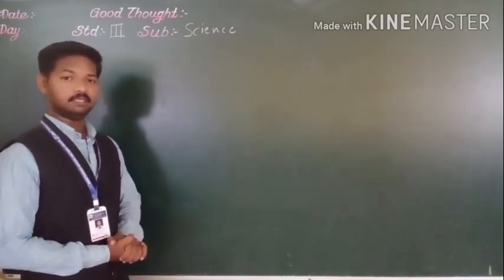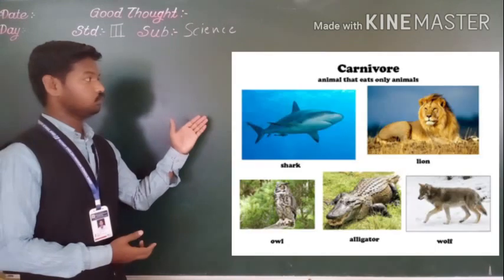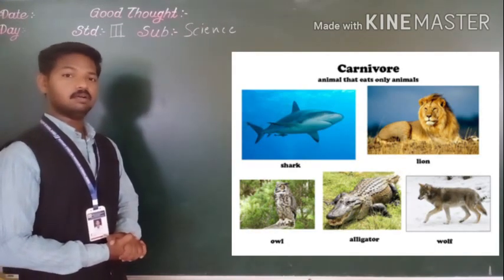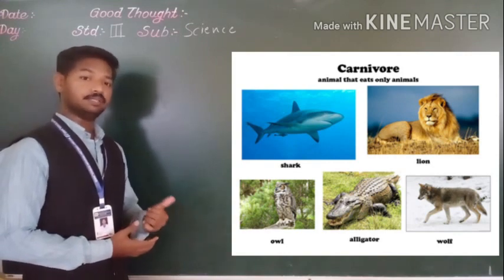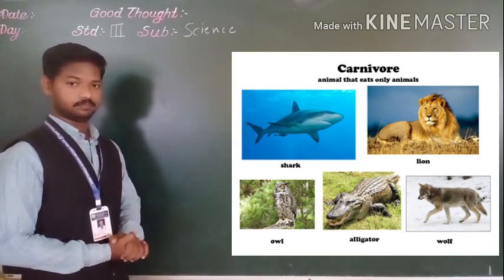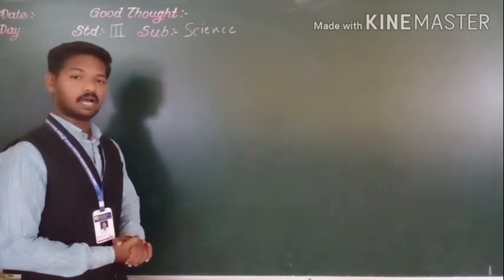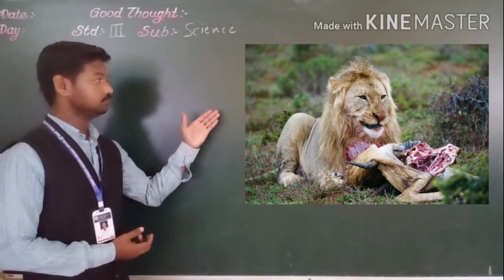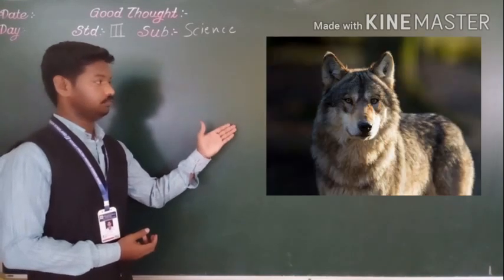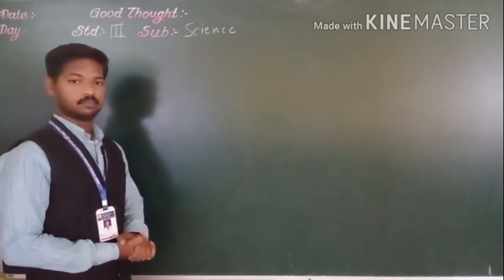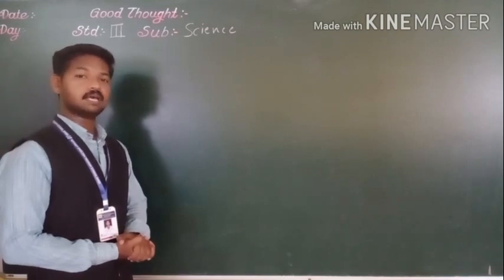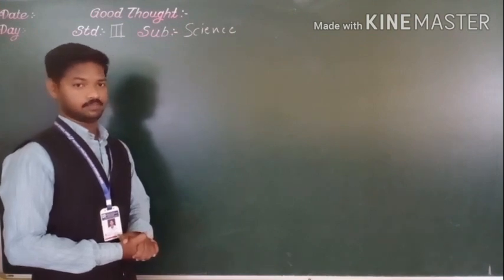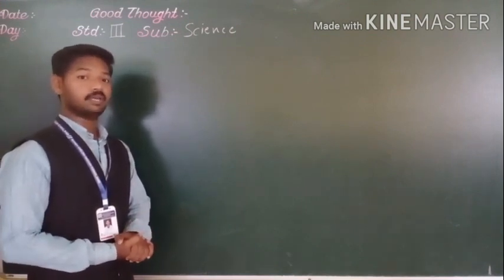Second type of animals are carnivores. Carnivores are animals those who eat flesh of other animals. Examples of carnivores animals are lion, tiger, wolf. These animals are also known as flesh eating animals. These animals are quite dangerous.